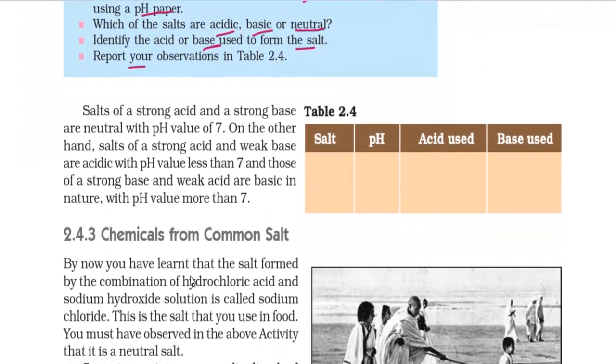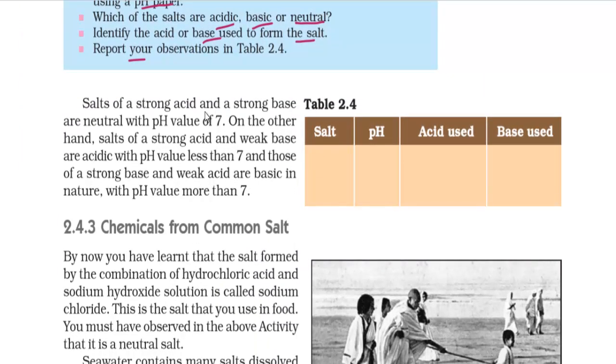We are seeing here that the salts of strong acid and strong base are neutral with a pH value of 7. You have to focus here that when the neutral salt is, it becomes strong acid and strong base. It becomes neutral salt, and what is the value of pH? 7.